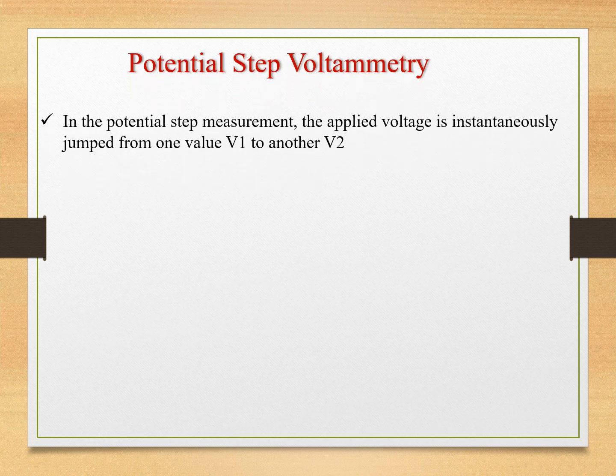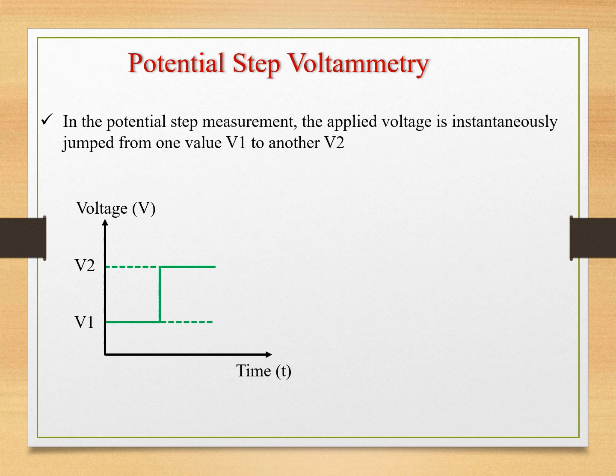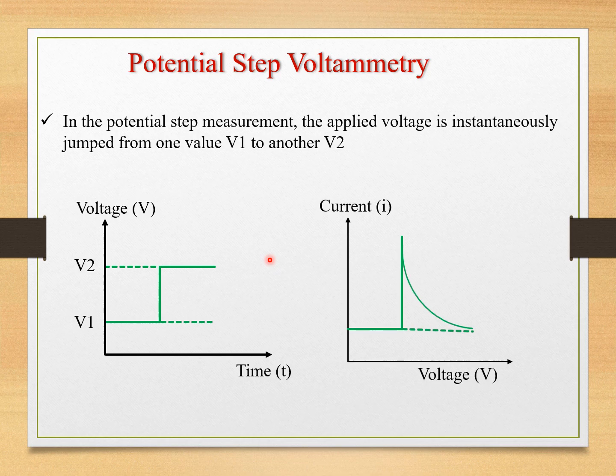First, we can check about potential step voltammetry. In this measurement, the applied voltage is instantaneously jumped from one value V1 to another value V2. The initial voltage is V1 and the final voltage is V2. That is, the potential sweep in this case is a step-like manner which resulted in the name potential step voltammetry. As the voltage changes, the current flowing through the cell is measured and this current is directly related to the rate of the reaction occurring at the working electrode, which results in the voltammogram with current on the y-axis and voltage on the x-axis.